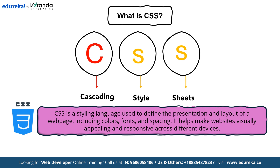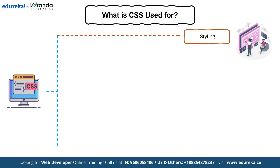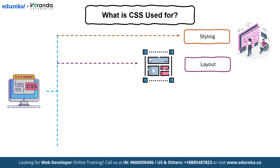CSS is an incredibly versatile tool that brings life and structure to websites. Let's break down its primary uses. First is Styling — CSS allows us to customize the appearance of a web page by defining colors, fonts and other visual elements, making it more visually appealing. Next is Layout — this helps to organize the structure of the web page, such as positioning elements like headers, sidebars and content areas precisely where they need to be.